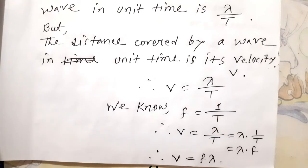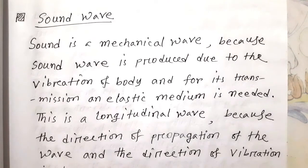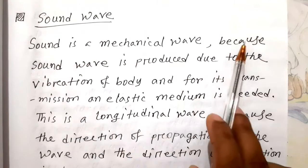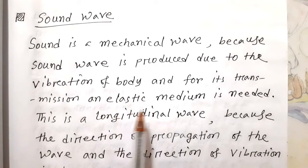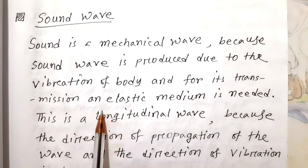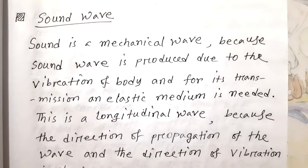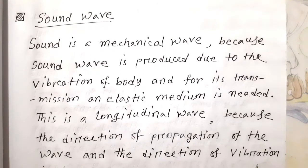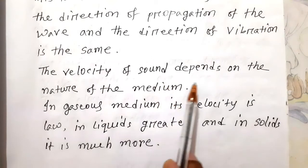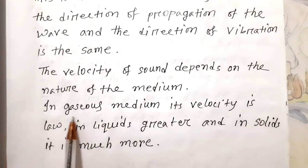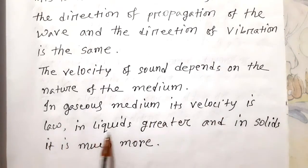We will use this relation to solve mathematical problems. Sound is a mechanical wave because sound wave is produced due to the vibration of a body and for its transmission an elastic medium is needed. This is a longitudinal wave because the direction of propagation of the wave and the direction of vibration is the same. The velocity of sound depends on the nature of the medium. In gaseous medium its velocity is low, in liquids greater, and in solids it is much more.